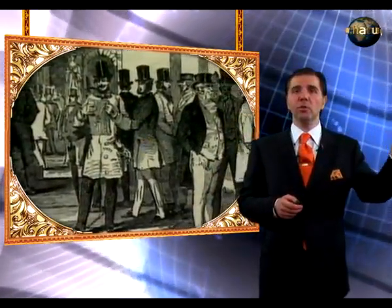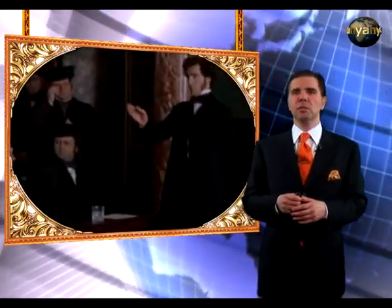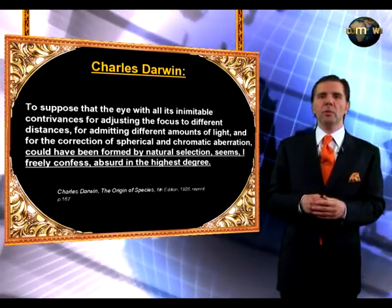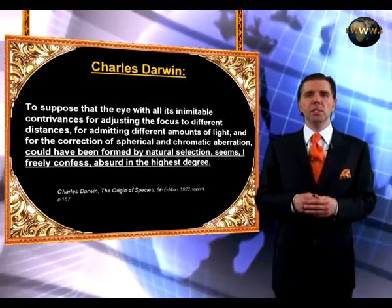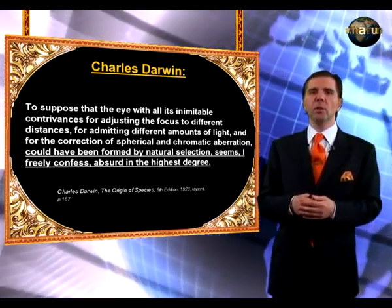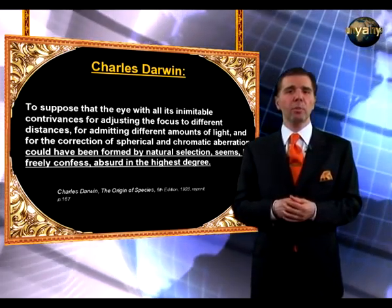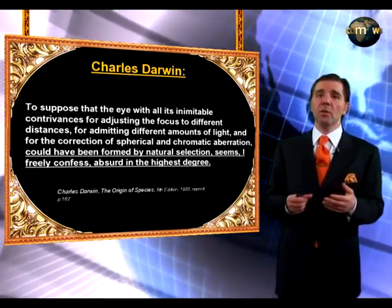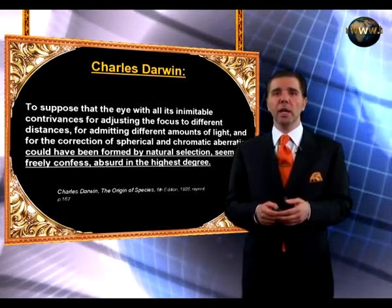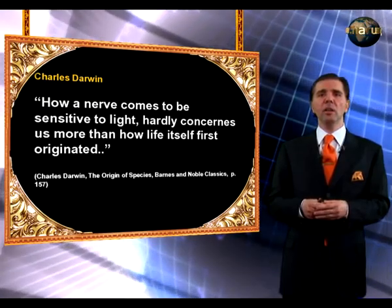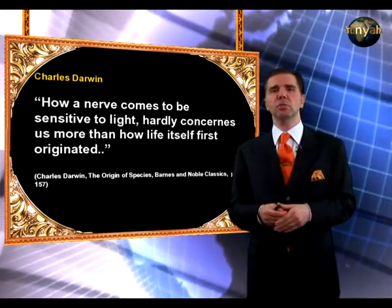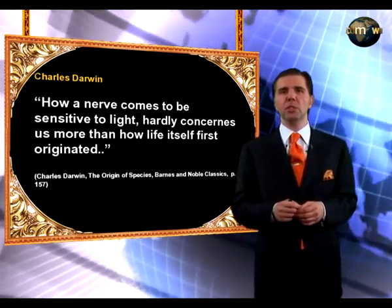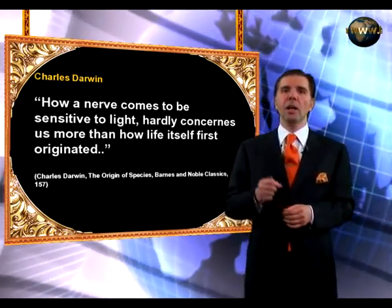Remember what Charles Darwin said? If complex organ systems could not have been formed by numerous successive slight modifications, his whole theory would collapse — and exactly this has happened. The new scientific evidences have shown that complex systems are irreducibly complex, falsifying the theory of evolution. Now let's see Darwin's own confession about the eye in Origin of Species. He said: 'To suppose that the eye, with all its inimitable contrivances for adjusting the focus to different distances, for admitting different amounts of light, and for the correction of spherical and chromatic aberration, could have been formed by natural selection, seems, I freely confess, absurd in the highest degree.' Darwin essentially admitted that his own theory is absurd in the highest degree. The new scientific evidences falsify the claims of the theory of evolution and prove the fact of creation — creation by an omnipotent intelligence, unmatched in the history of Allah.